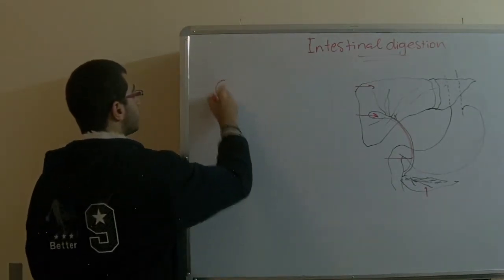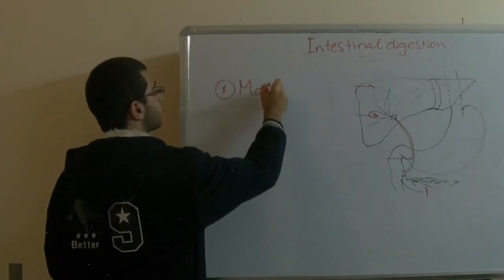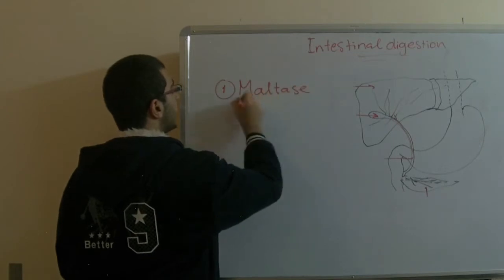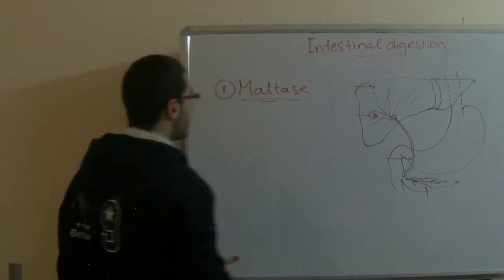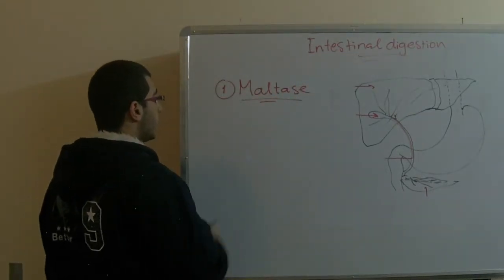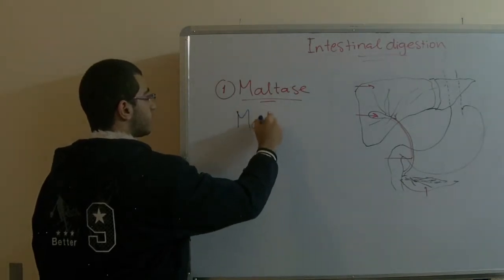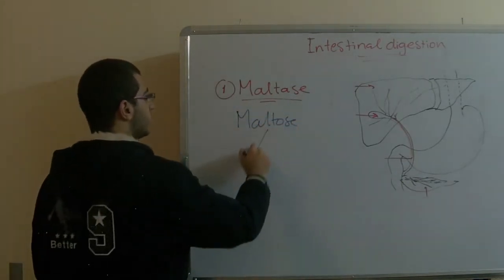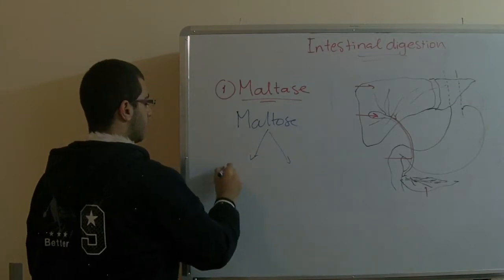In these sugar enzymes we have three types. The first one is called the maltase. This maltase breaks down the maltose sugar, the disaccharide, into two glucose molecules.